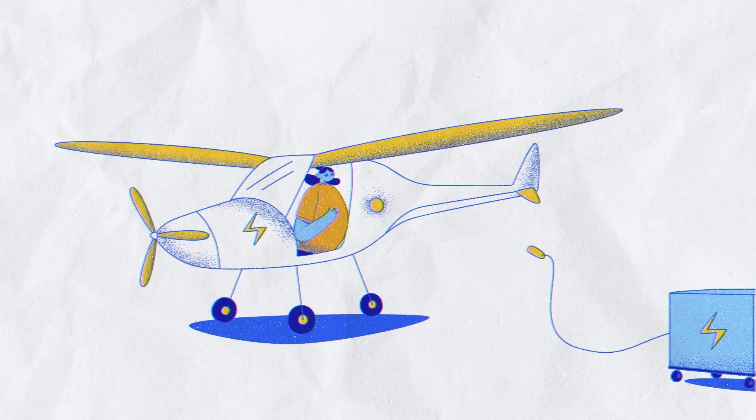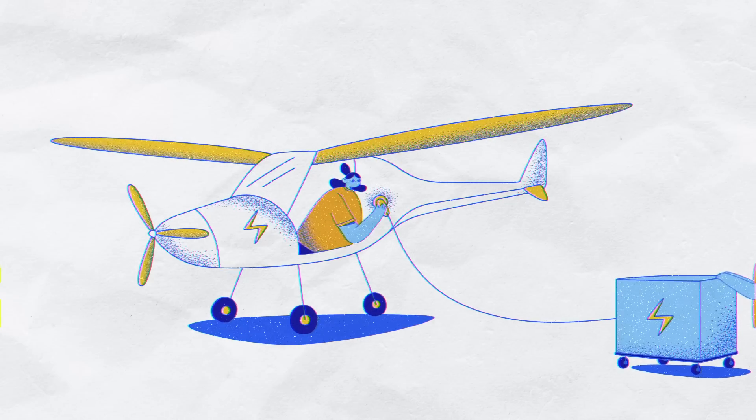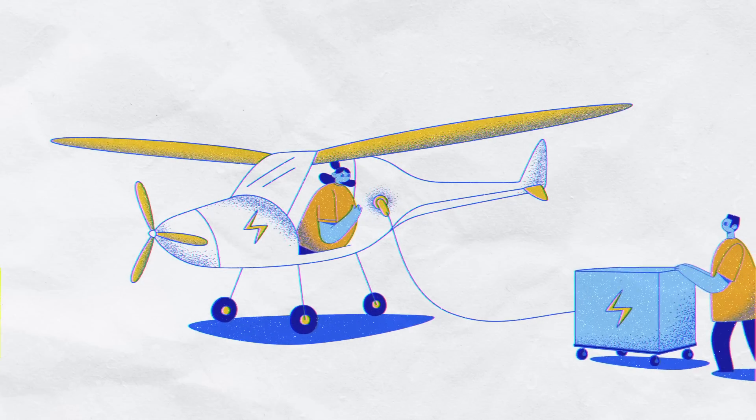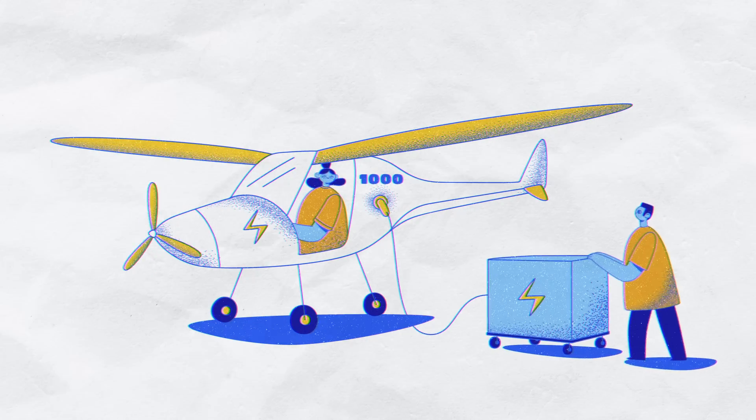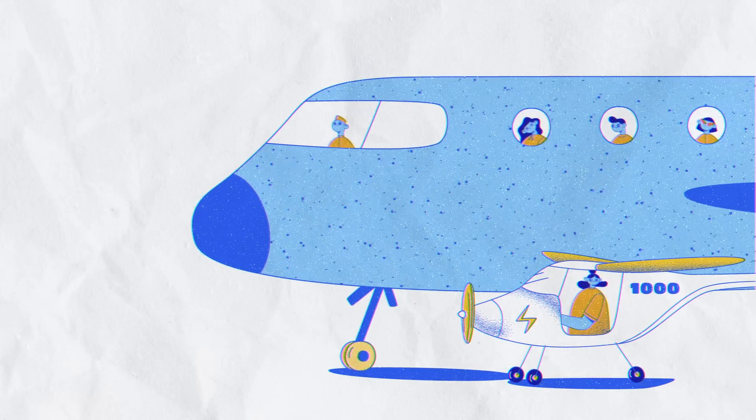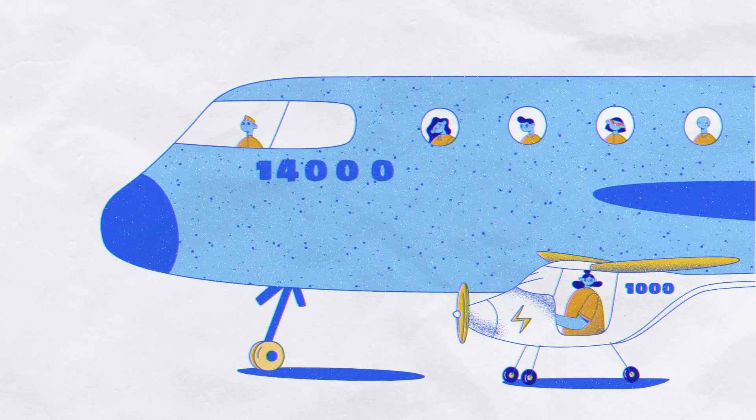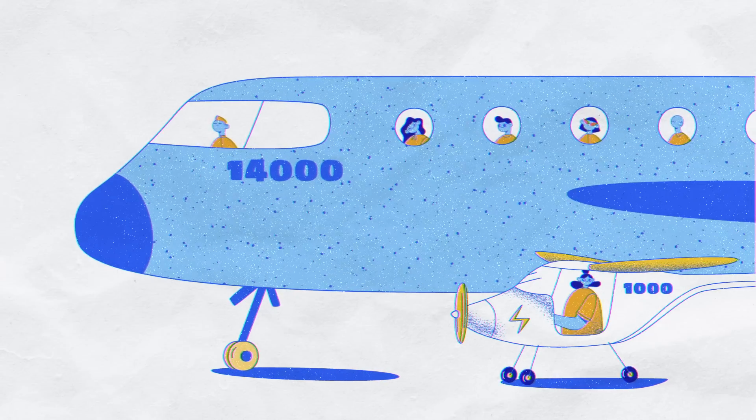That's why electric planes aren't a thing. The best electric plane can only carry two people for about 1,000 kilometers on one charge, or its batteries would be too heavy to fly. A typical commercial jet can carry 300 people over 14,000 kilometers before refueling.